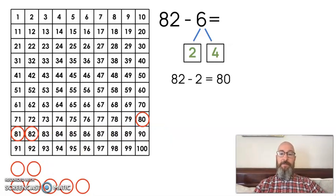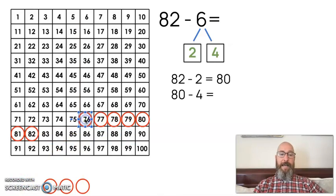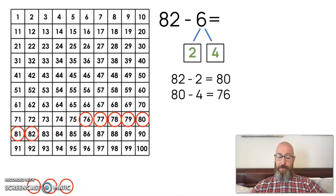After that, I'm going to subtract the next number, and that is 80 minus 4, because I've already taken away the 2. Now it's time to take away the 4. 80 minus 4, if I take away 1, 2, 3, 4, I get 76. So the difference, the answer to the subtraction question, is 76. Did you see how we did that?